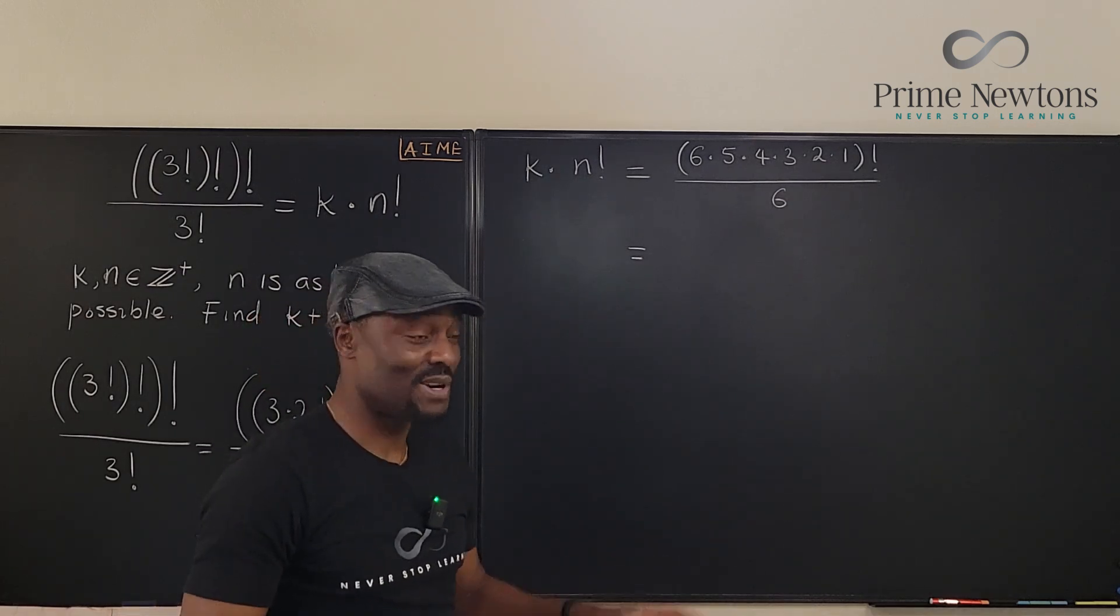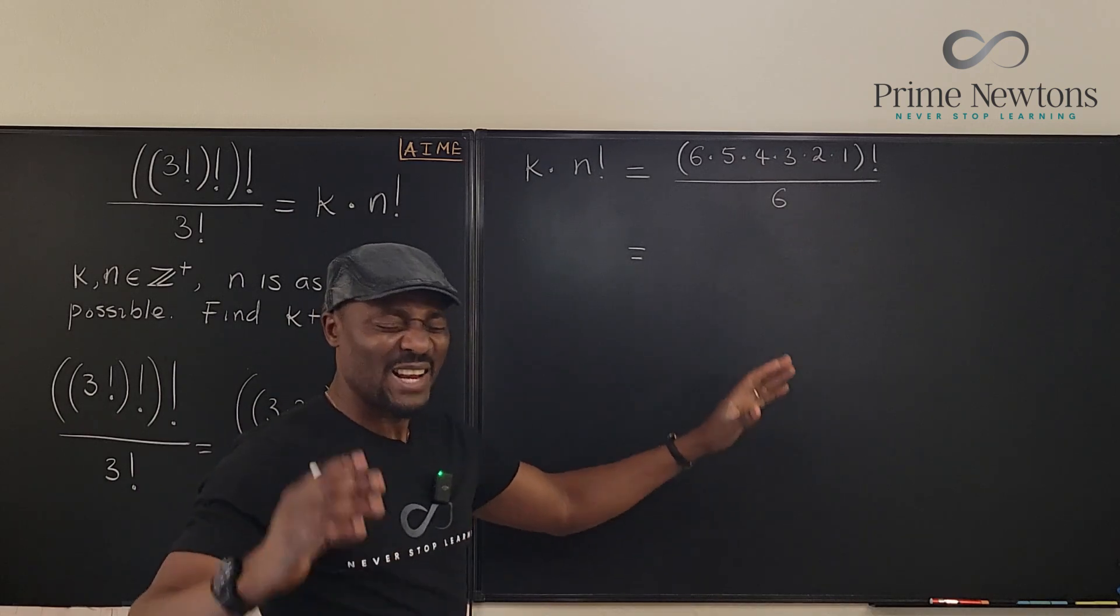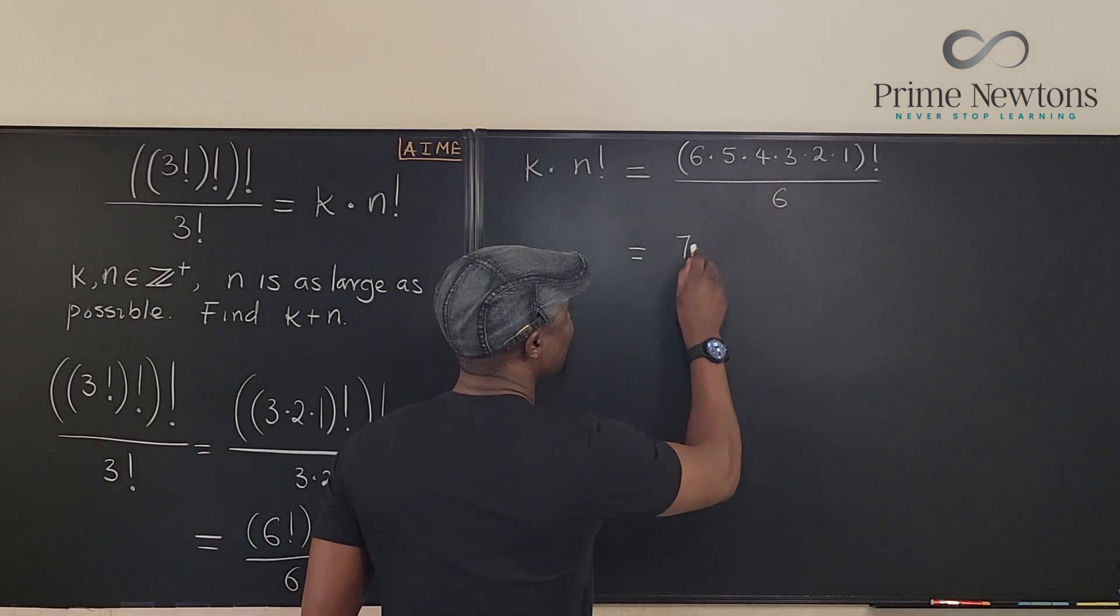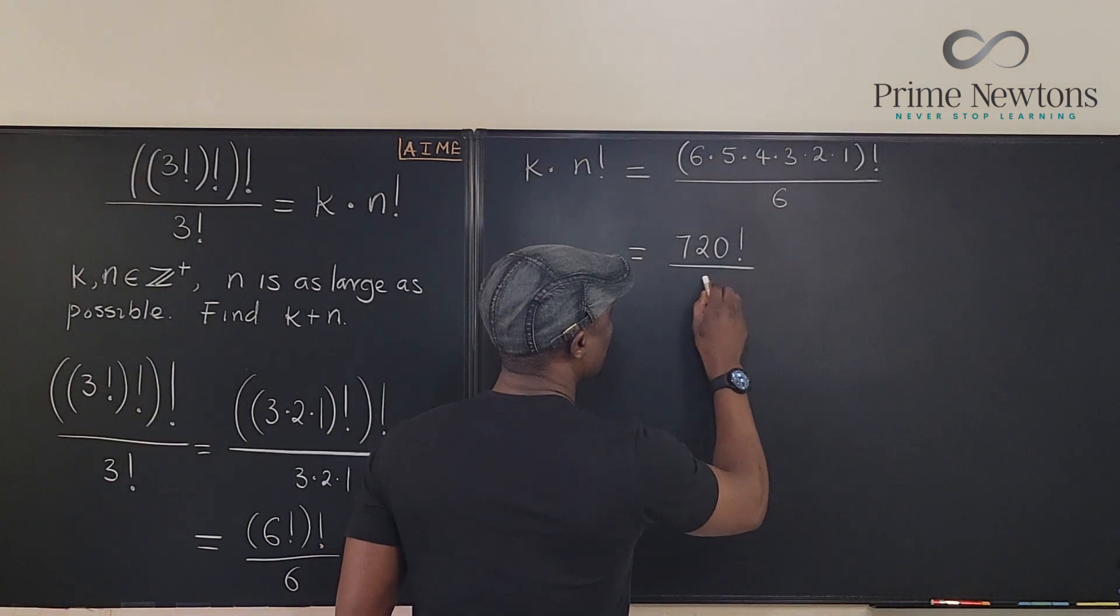I knew 6 factorial was 720, but I was working it along with you so you don't think that, oh, this guy is too smart. I'm not that smart. Okay, so this is going to be 720 factorial over 6.